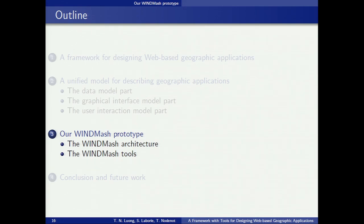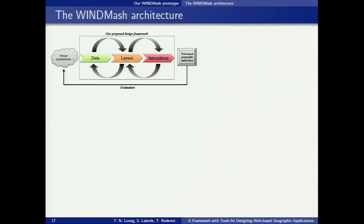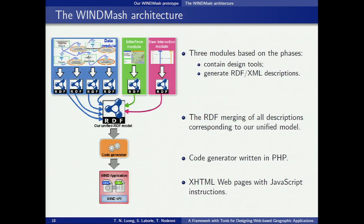Now let's take a look at our prototype named WinMatch. This allows designers to create and to generate automatically interactive web-based geographic applications. As presented in this figure, the three phases of the framework have been implemented in three modules: data, interface, and user interactions. Each module manipulates some RDF descriptions.